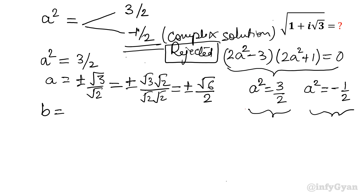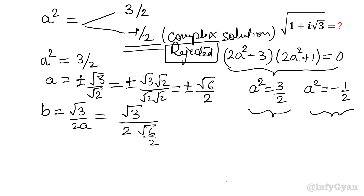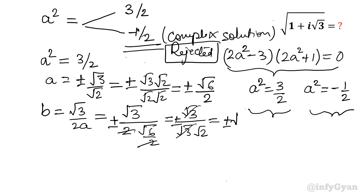Since b equals root 3 over 2a, and 2a equals plus or minus root 6, we get root 3 over root 6, which is root 3 over root 3 times root 2. Root 3 cancels out, giving 1 over root 2. Multiplying numerator and denominator by root 2, b equals plus or minus root 2 over 2.